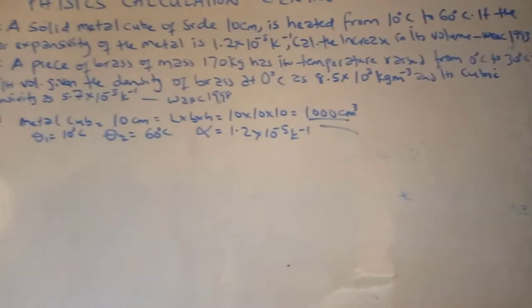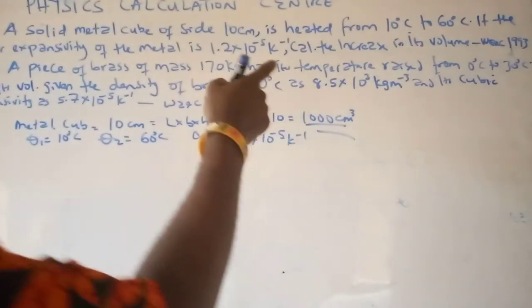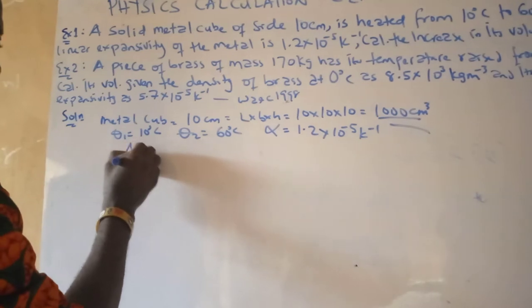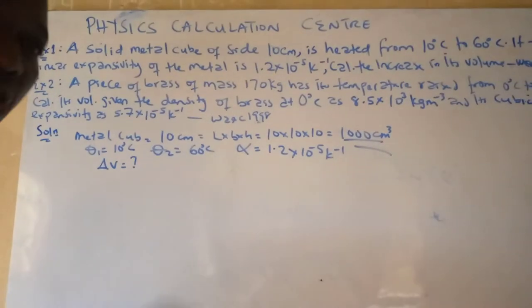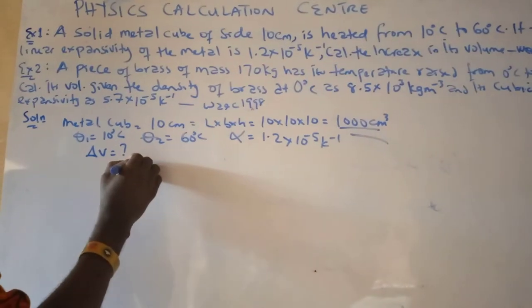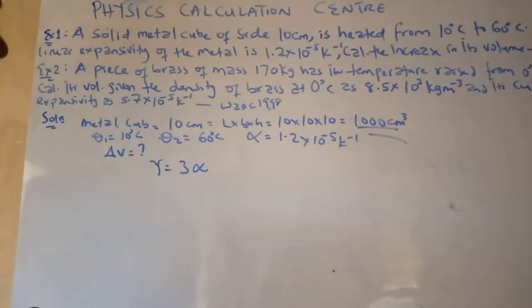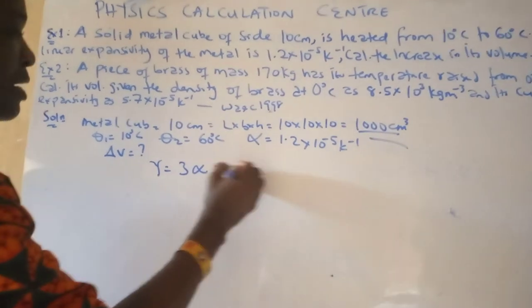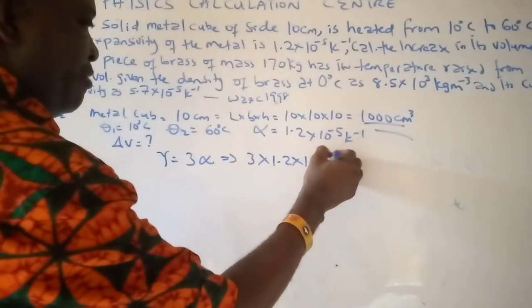Mind you, this is a past question. The question asks for increase in volume. We cannot find volume from linear expansivity directly, so since cubic expansivity is 3 times the linear expansivity, this will automatically become 3 × 1.2 × 10⁻⁵.